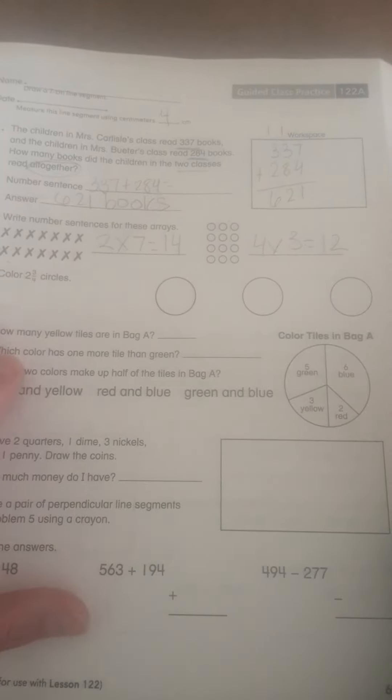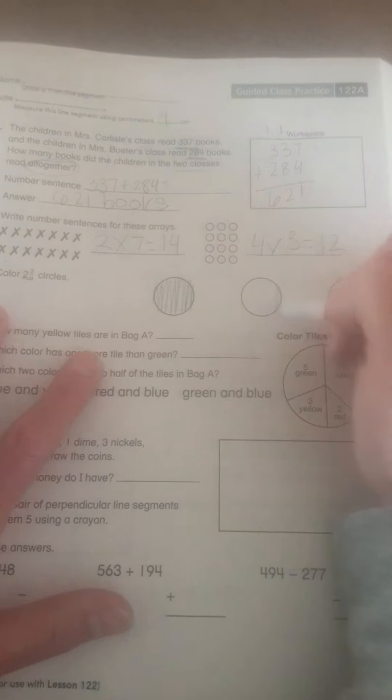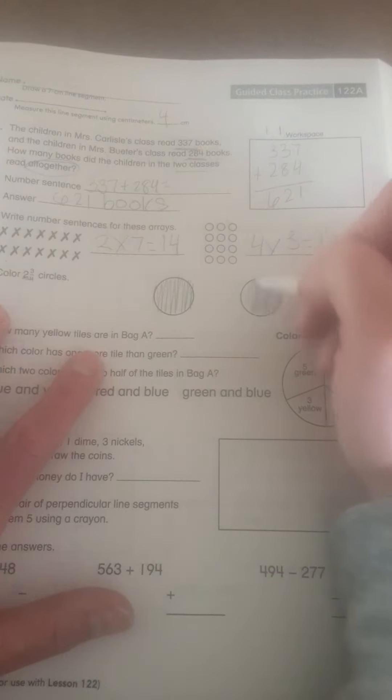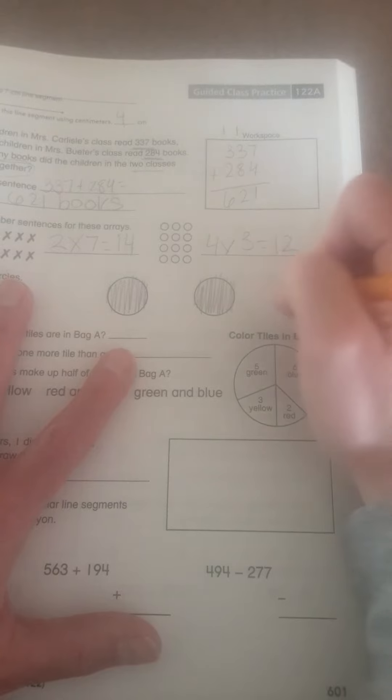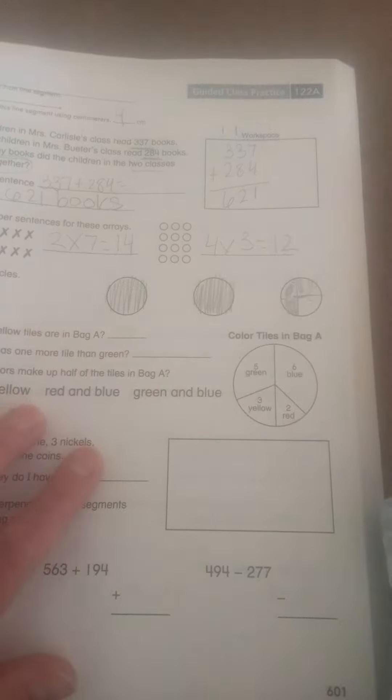Color 2 and 3 fourths circles. So the whole number is 2. So I'm going to have to color all of this one, 1, and all of this one in 3 fourths. So that means I have to cut this one in fourths. And I have 1, 1, and 1. That would be 3 out of 4ths, or 3 fourths.